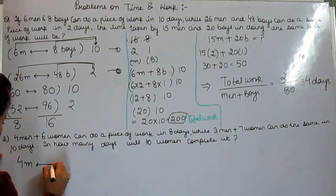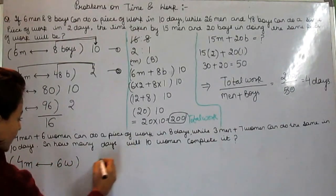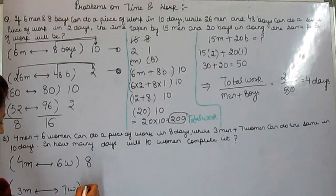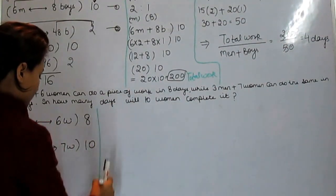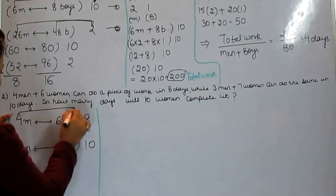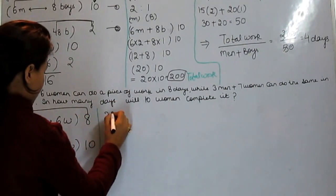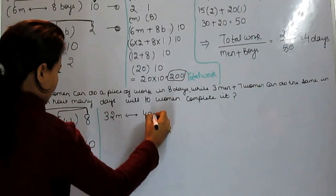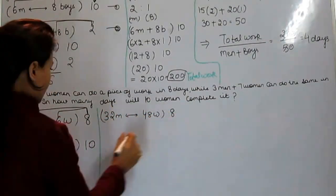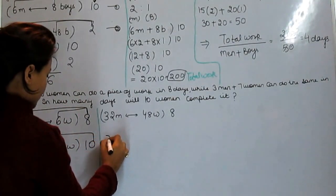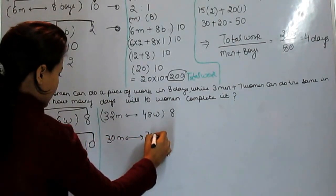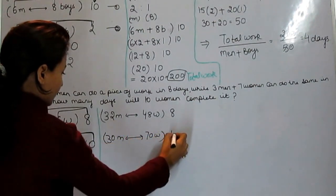4 men plus 6 women can do a piece of work in 8 days. Likewise 3 men and 7 women can do the same work in 10 days. 4 times 8 is 32, 6 times 8 is 48, this 8 will be as it is. 3 times 10 is 30, 7 times 10 is 70, this will be the same.